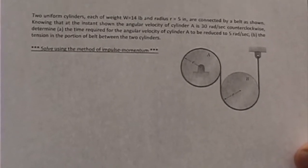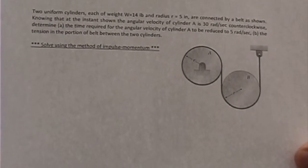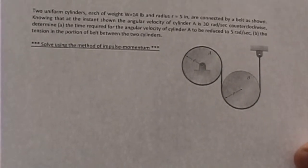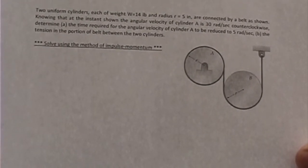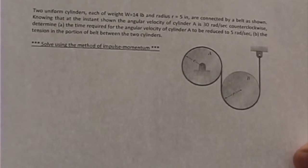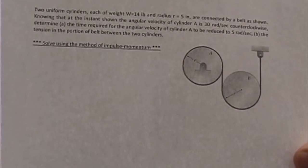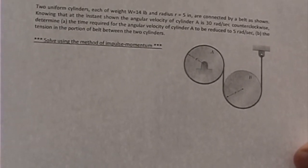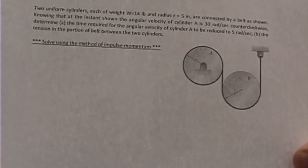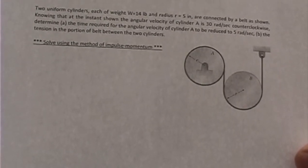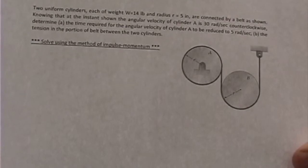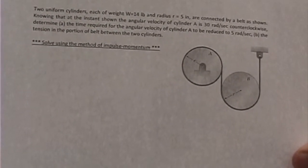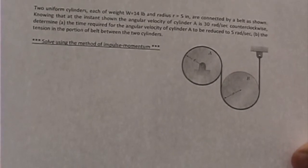So in our problem, we have two uniform cylinders, each of weight 14 pounds and radius 5 inches, connected by a belt as shown. Knowing that at the instant shown the angular velocity of cylinder A is 30 radians per second counterclockwise, determine: a) the time required for the angular velocity of cylinder A to be reduced to 5 radians per second, and b) the tension in the portion of belt between the two cylinders. Solve using the method of impulse momentum.